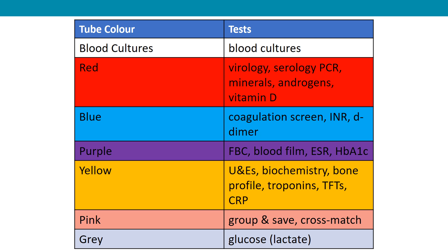Pink-topped blood bottles are for group and save, cross-match, and haemolysis screening. Grey bottles are used to measure glucose, and some trusts also use grey bottles to measure serum lactate.